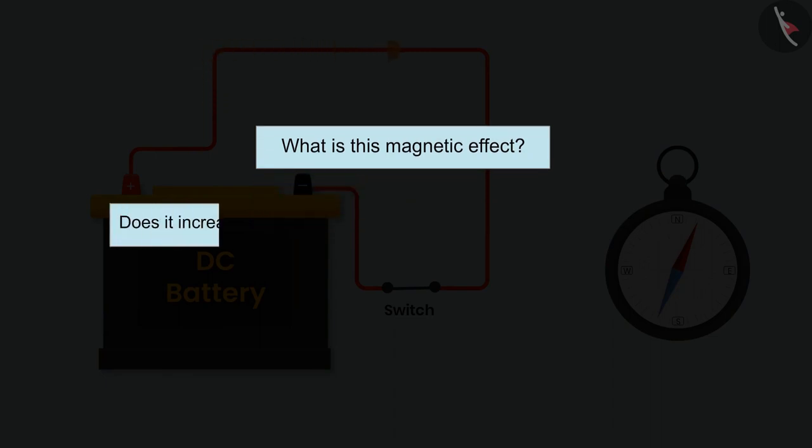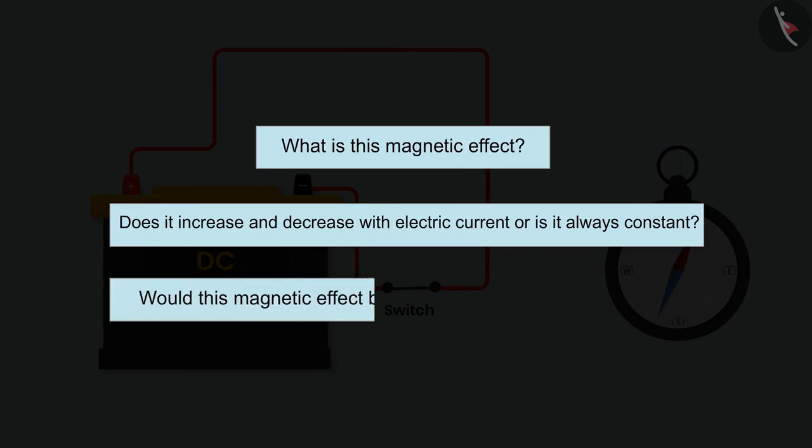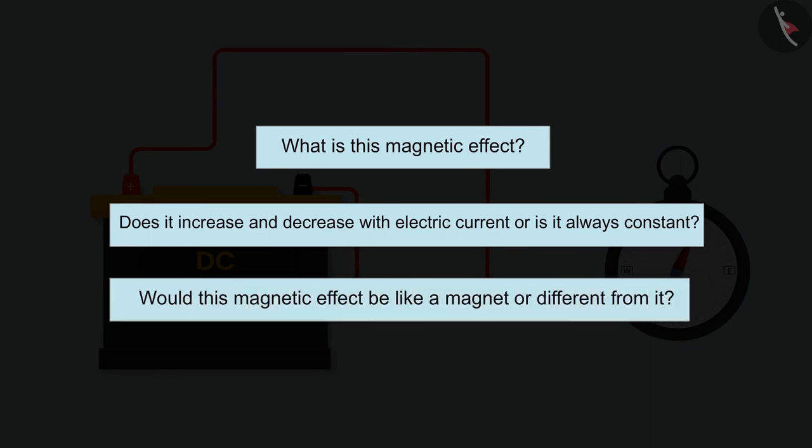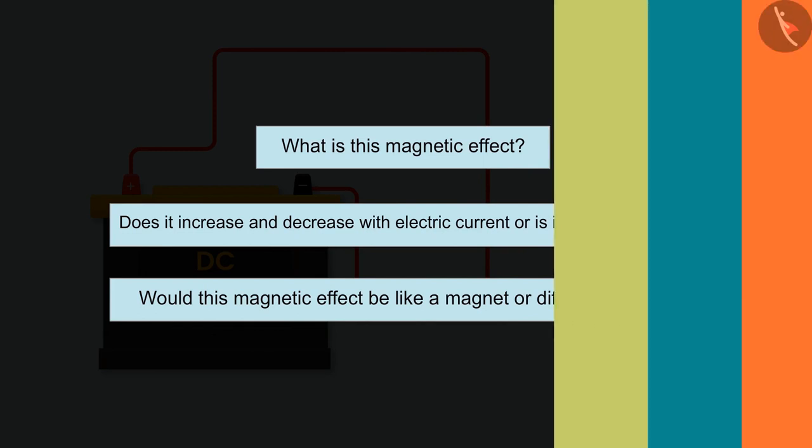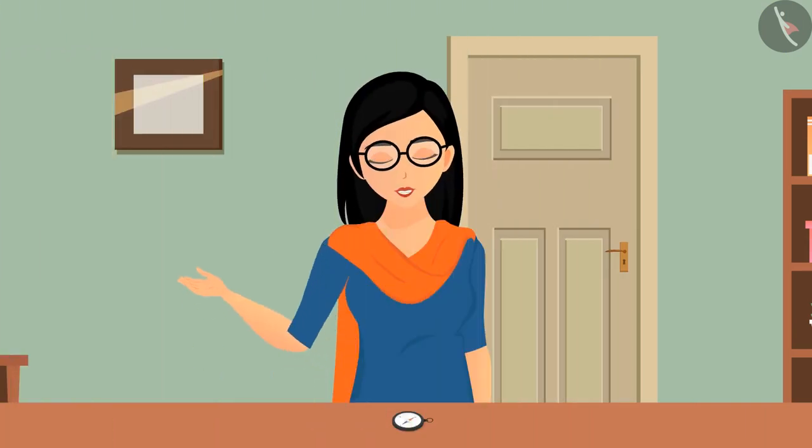Does it increase and decrease with electric current or is it always constant? Would this magnetic effect be like a magnet or different from it? Similar questions will be emphasized in today's video. So first of all we need to know what's a small round looking device.